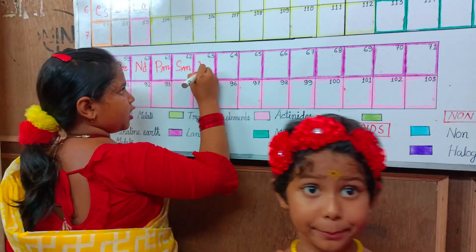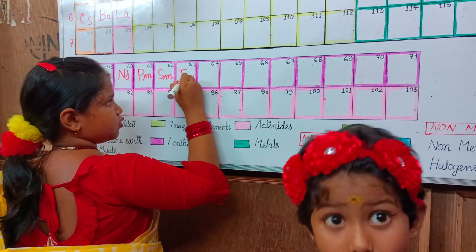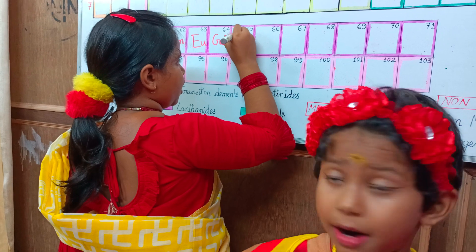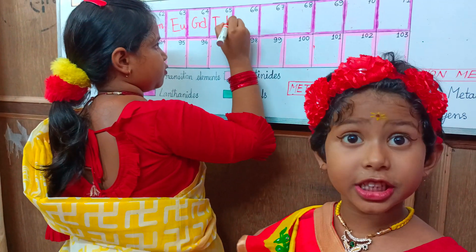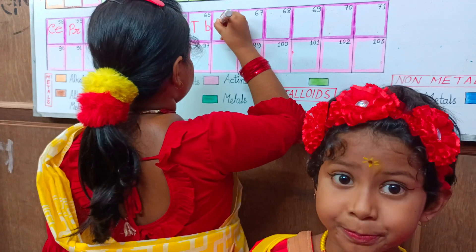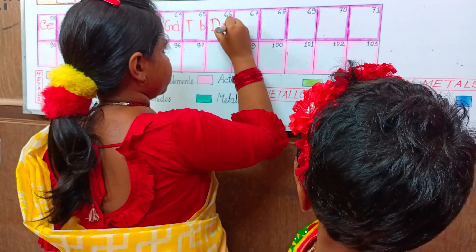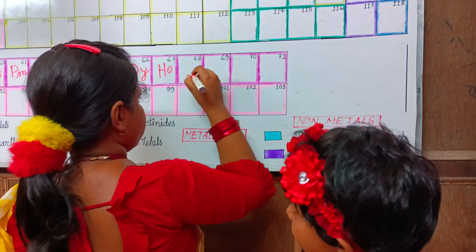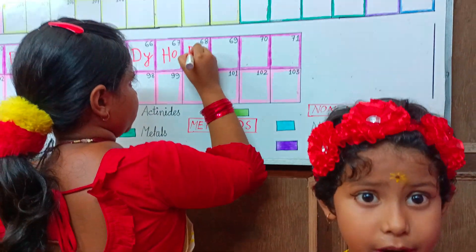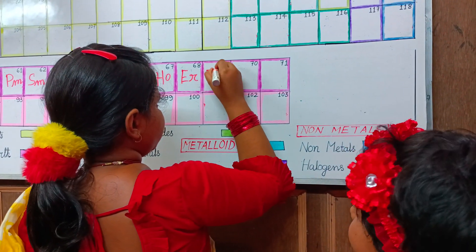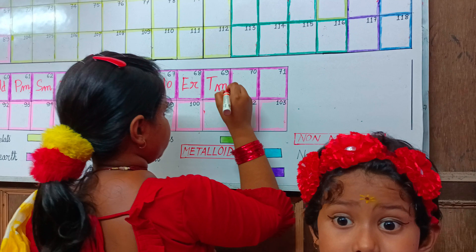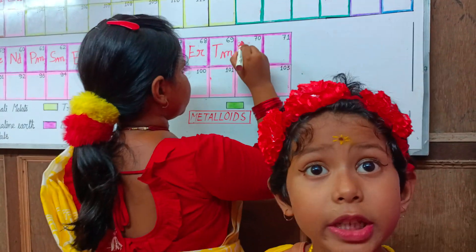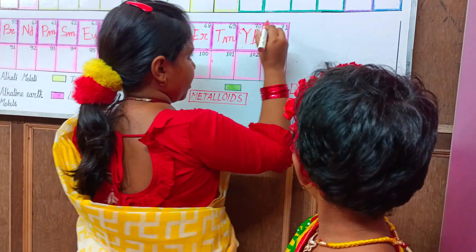63 europium, Eu. 64 gadolinium, Gd. 65 terbium, Tb. 66 dysprosium, Dy. 67 holmium, Ho. 68 erbium, Er. 69 thulium, Tm. 70 ytterbium, Yb. 71 lutetium, Lu.